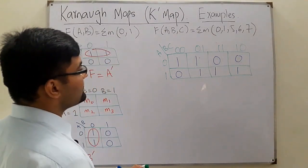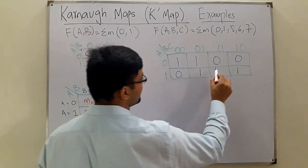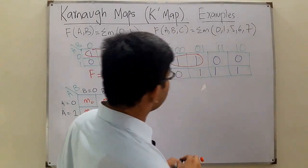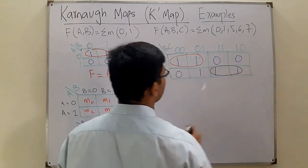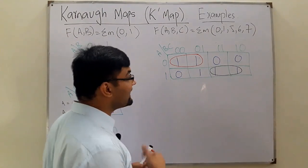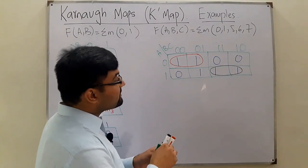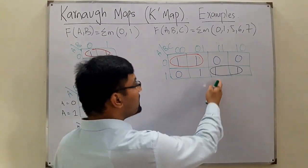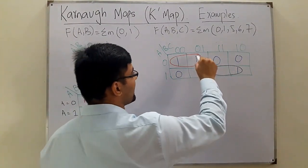Group the ones. The first group covers these two cells. The second group covers these two cells. One cell remains — but since it has adjacent ones in its neighborhood, it can be grouped with either this one or that one.